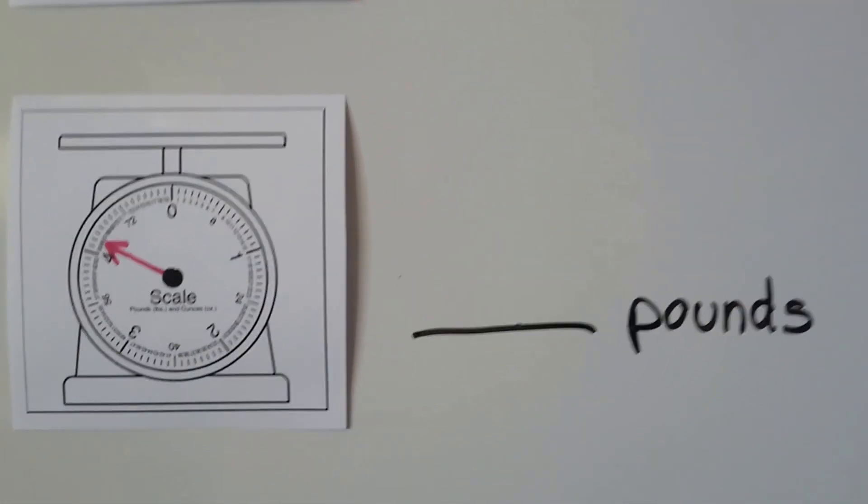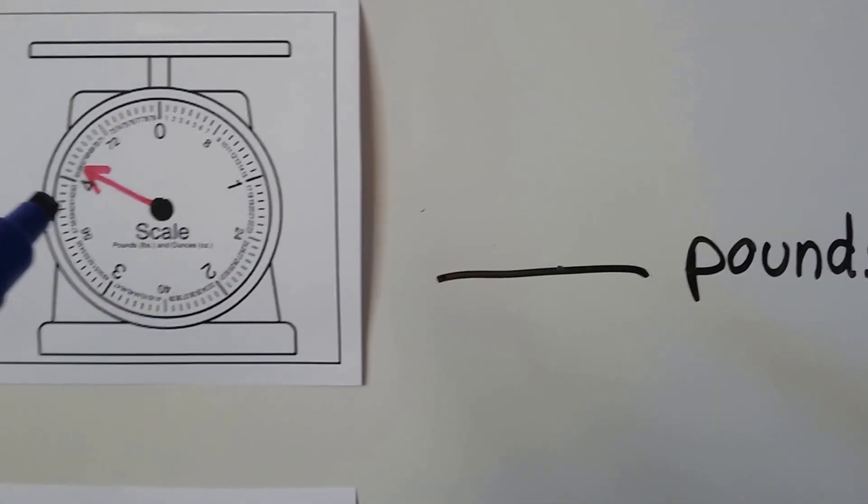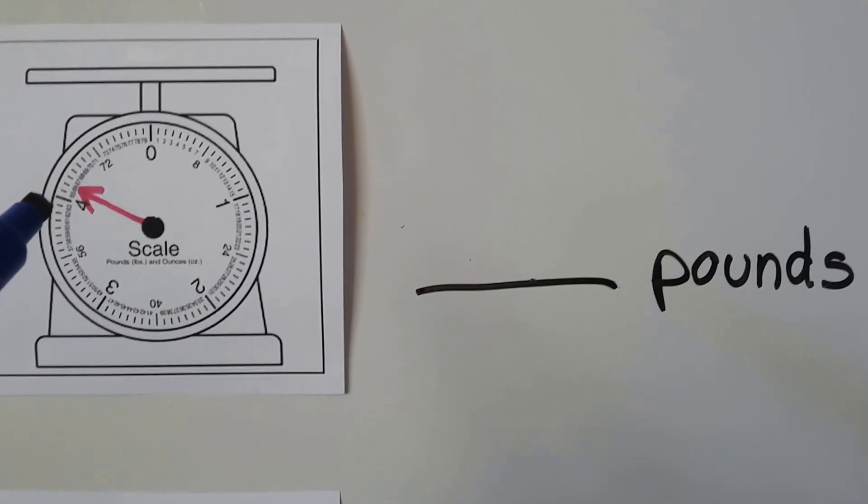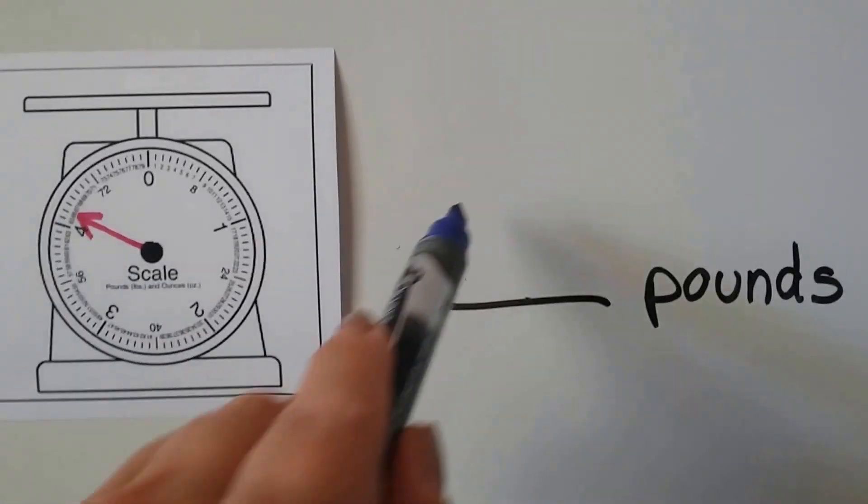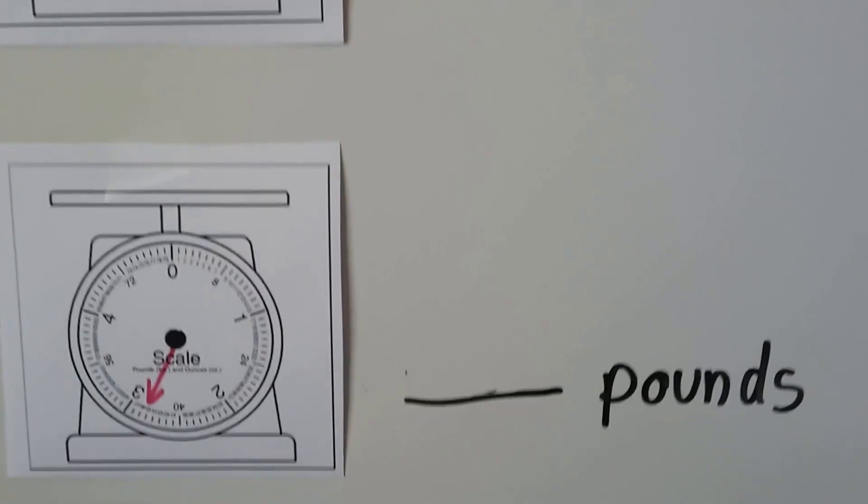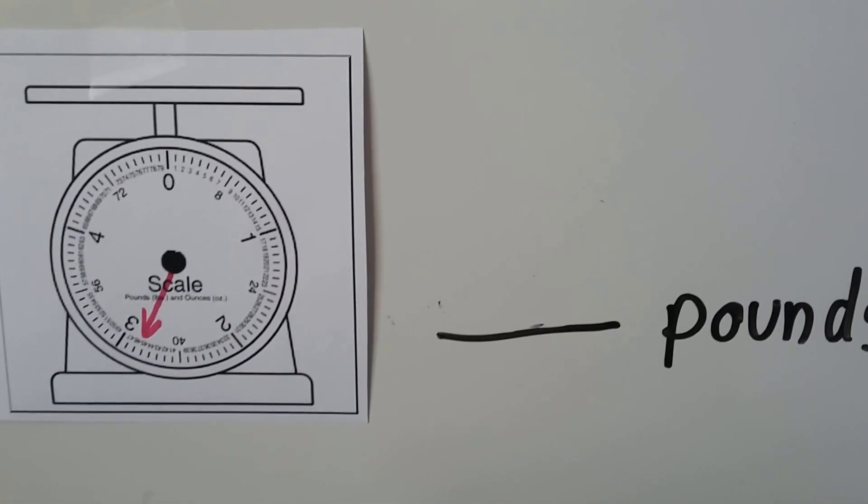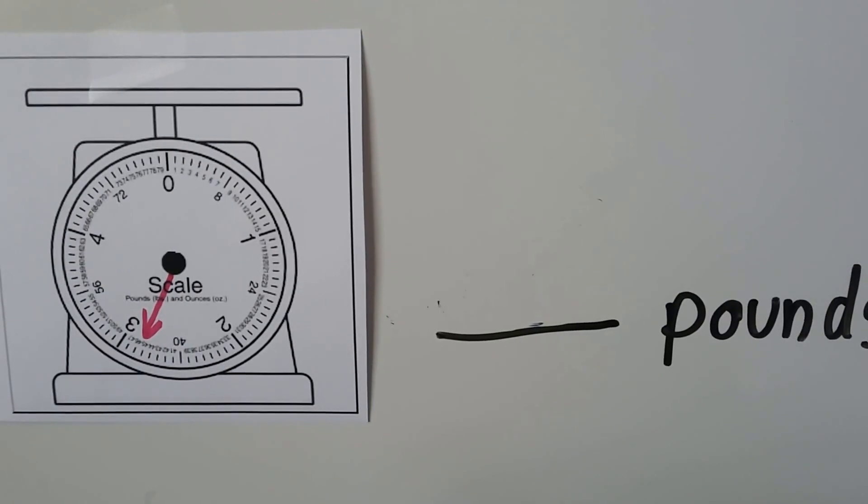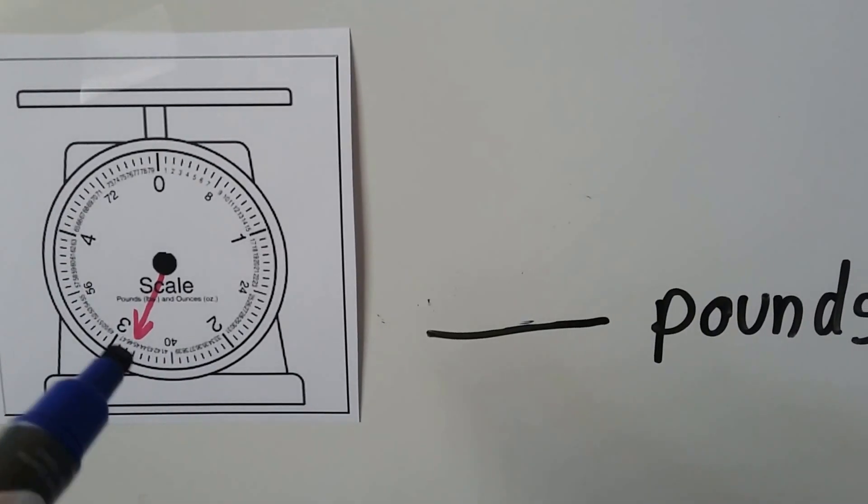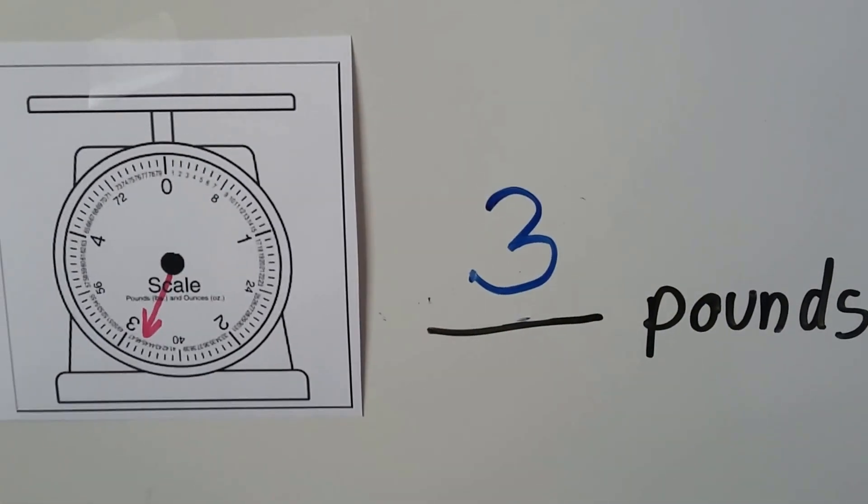How about this one? Is this dial pointing pretty close to the four pounds? Yeah, it is. So this would be about four pounds. How about this one? What's the nearest pound? Yeah, it would be a three. It's not quite on the three, but that would be the nearest one.